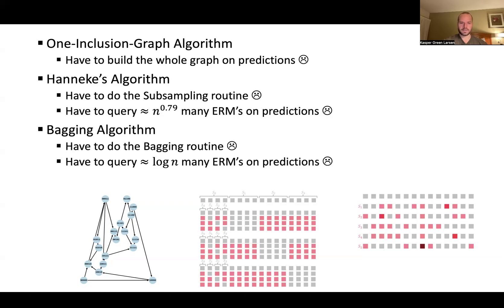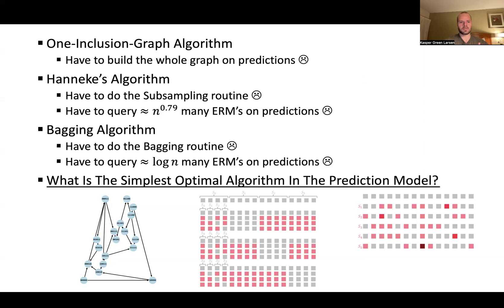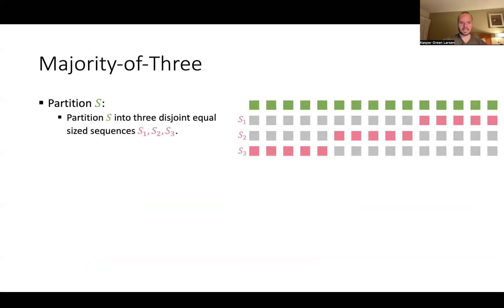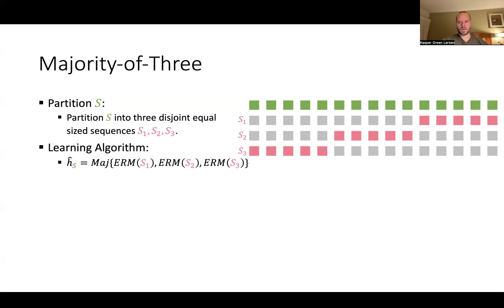So the question we ask in this work is: what is the simplest optimal algorithm in this prediction model? We know from previous lower bounds that any optimal algorithm has to be improper — it cannot just output something from the hypothesis class. If you want something improper, a majority of two is not well-defined when they disagree, so majority of three is really the simplest imaginable: partition your training data into three disjoint pieces of equal size.